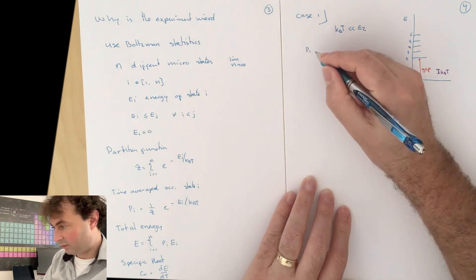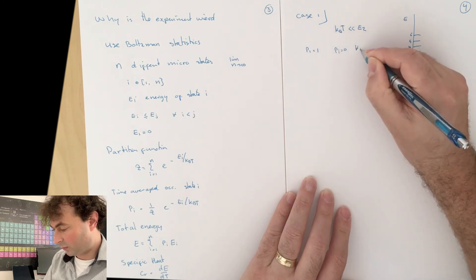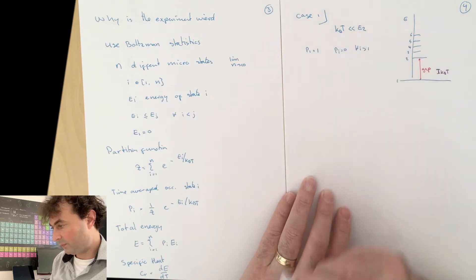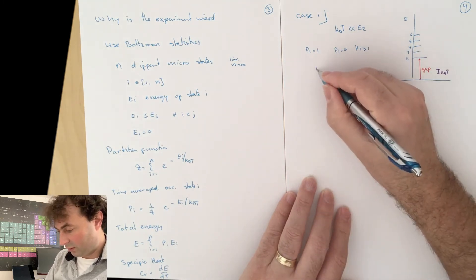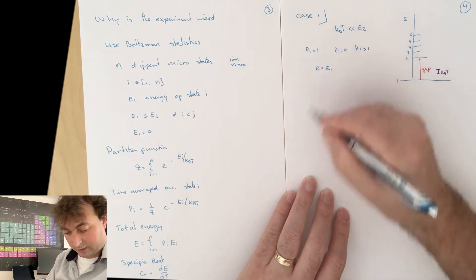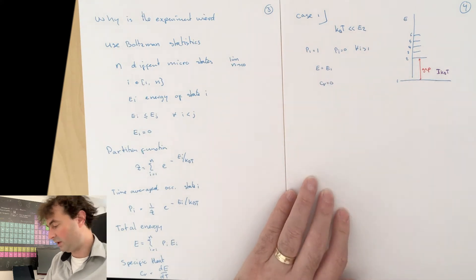In that limit, we find that P1 is 1, PI is 0 for all I larger than 1. Your total energy is the energy of the first state. And then if we take the derivative with respect to temperature, you'll find that Cv is 0.